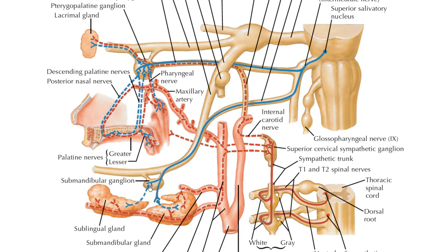If you were to guess what neurotransmitter and receptor are at the preganglionic synapse, the answer is acetylcholine and nicotinic. And for the postganglionic synapse onto the target organ, the neurotransmitter is acetylcholine and the receptor is muscarinic.